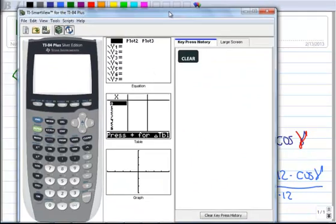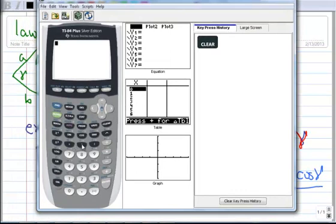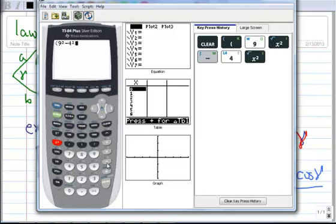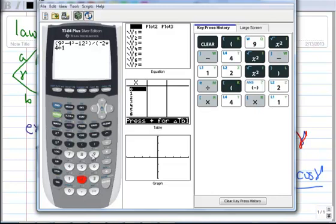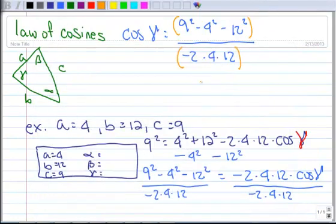Now, I think you can see that. Parentheses. So I've got 9 squared. Nine squared. Minus 4 squared. Minus what was the other one? 12 squared, end of parenthesis, divided by parenthesis, negative 2 times 4 times 12, there we go, enter. All right, so the cosine, let me just pull this down for a minute, so the cosine of gamma equals 0.8229.